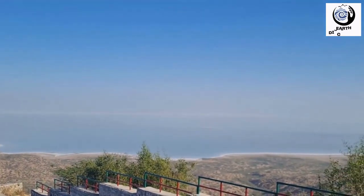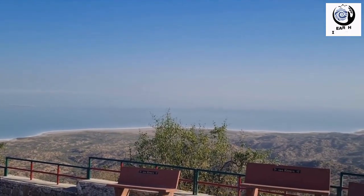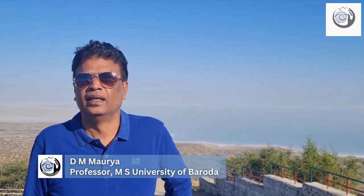We are standing at the highest point in Kutch — the Babia peak on the Pachham hill — and in the background you can see the Great Rann of Kutch. The Great Rann is a very saline terrain; it gets submerged by high tides and high precipitation during monsoon seasons, and that water remains for some time. This sea water comes from the western end where the basin is connected to the Arabian Sea.